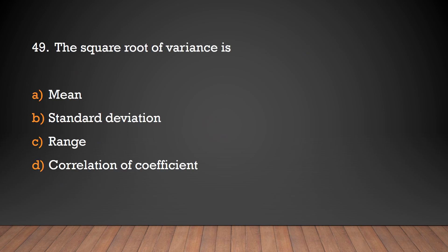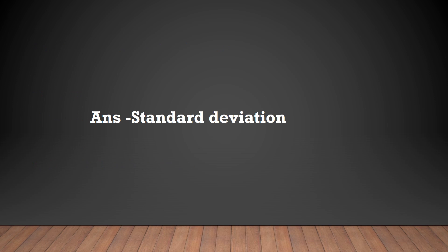The square root of variance is known as which of the following: mean, standard deviation, range, or correlation coefficient? The answer is: standard deviation.